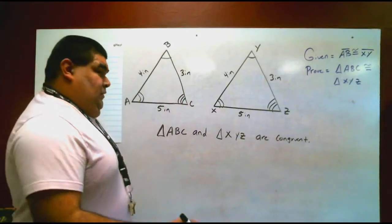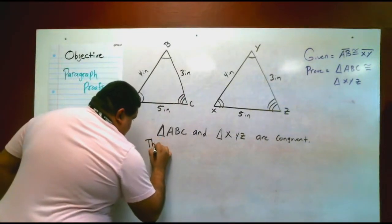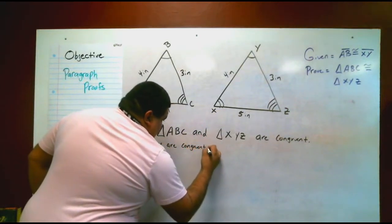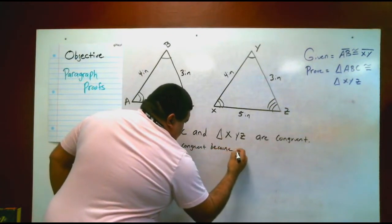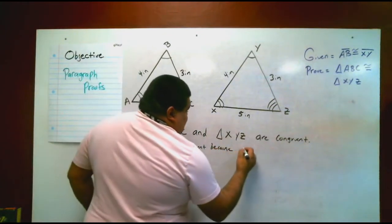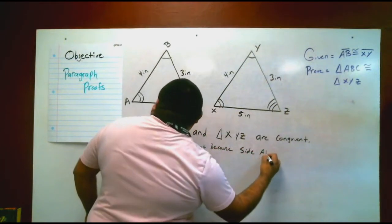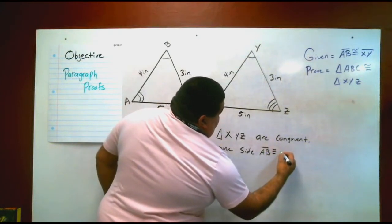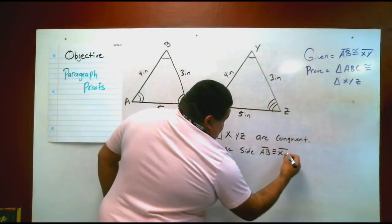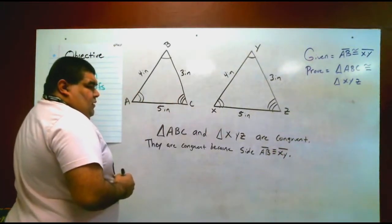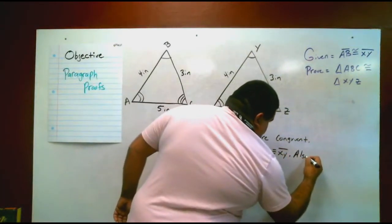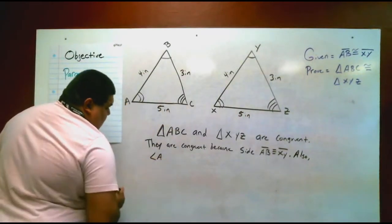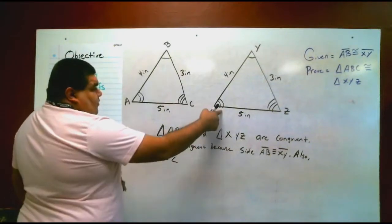Now we're going to prove why are they congruent. They are congruent because side AB is congruent to XY. Also angle A is congruent to angle X.